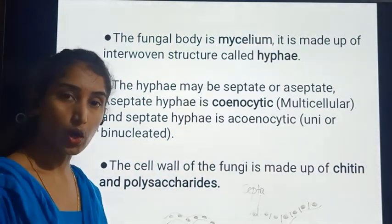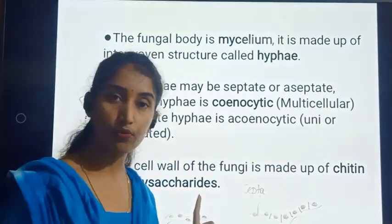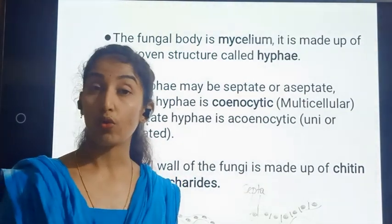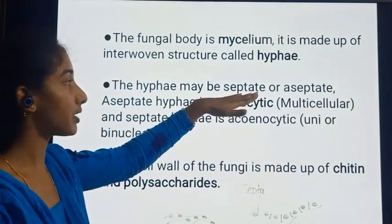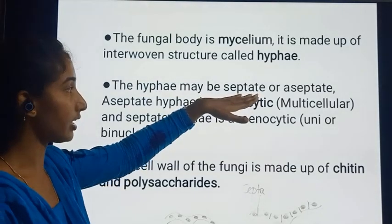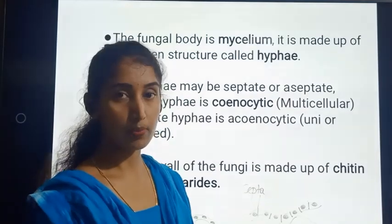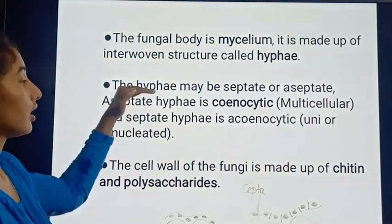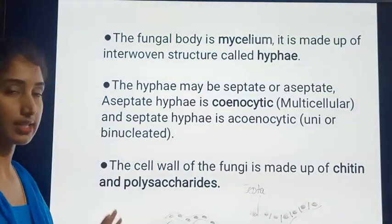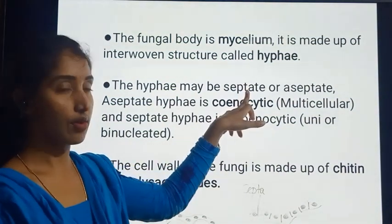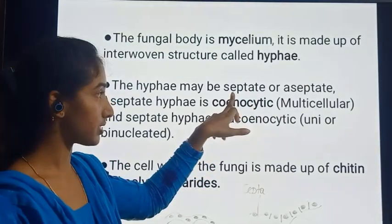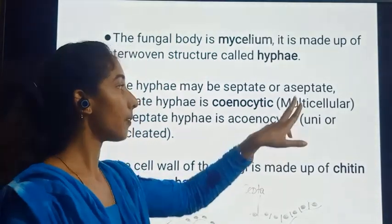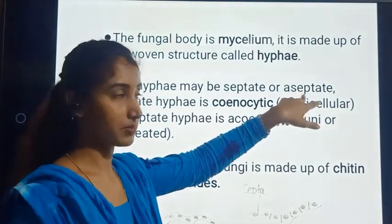Aseptate hyphae can be seen in very primitive or lower fungi, whereas septate hyphae are observed in higher or more developed fungi. To summarize: hyphae with cross walls or septa are called septate hyphae; hyphae without cross walls between the nuclei are called aseptate hyphae.